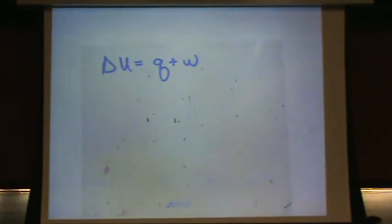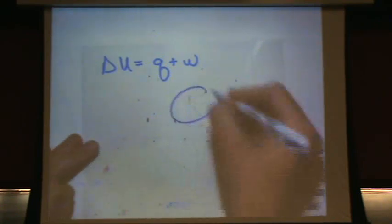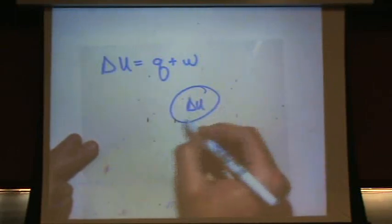Delta U represents the total energy of the system. Q and W represent the flow of energy in or out of the system. So if I drew it, I would draw it like this. Delta U is the total energy in your system.